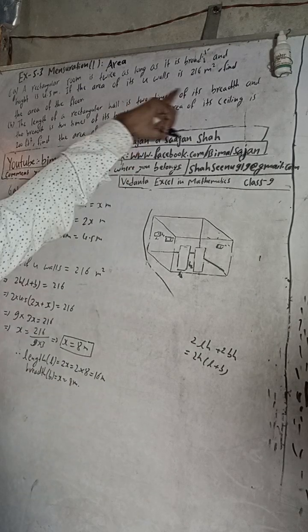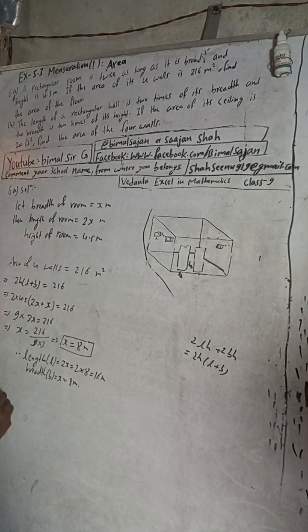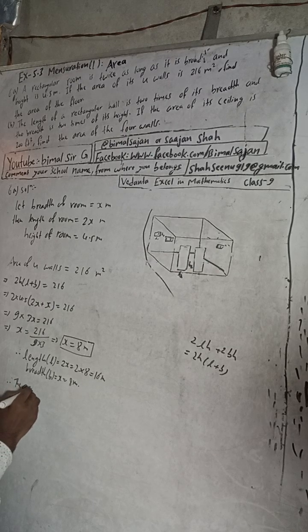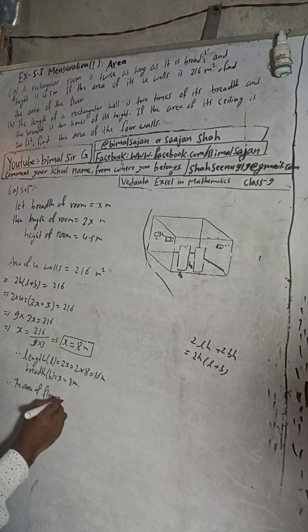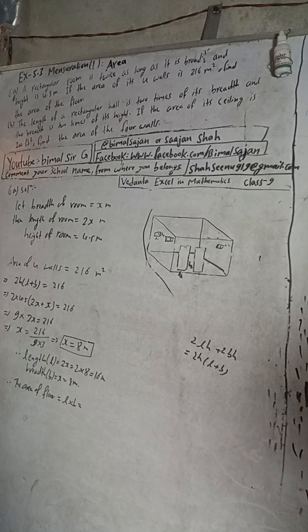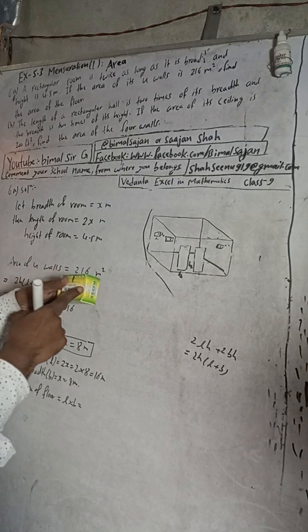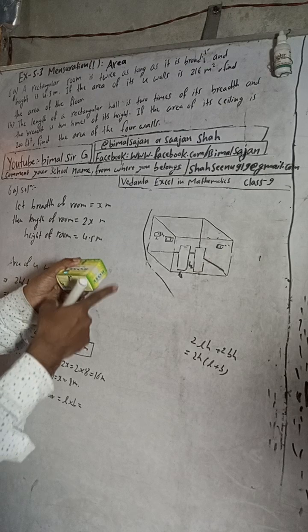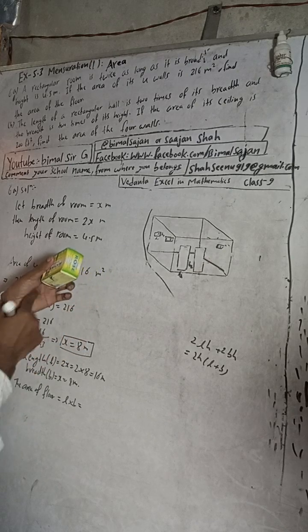We got length and breadth. Now we can find the area of the floor. Therefore, the area of the floor equals l times b, length times breadth, because the floor is the area of the base.